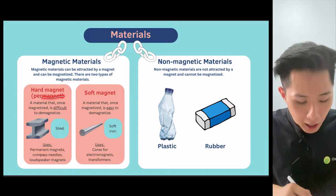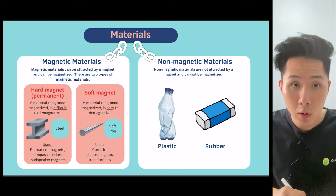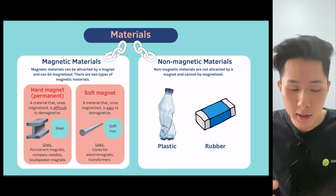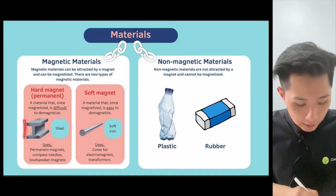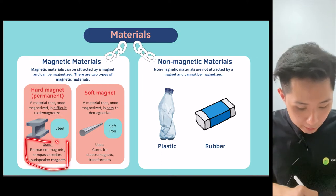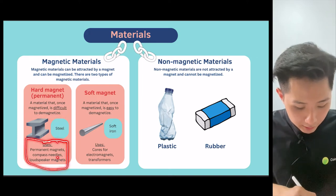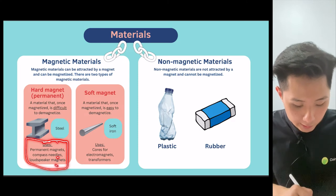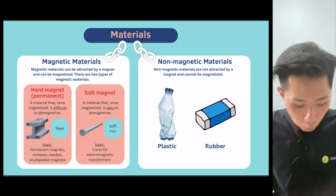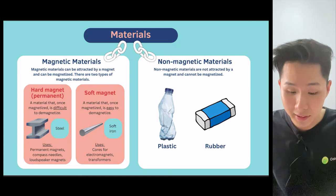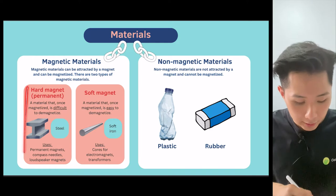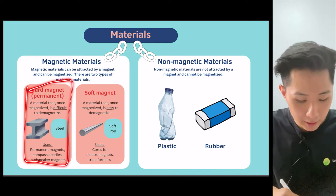Let me explain. A hard magnet is a material which, once it is magnetized, is very difficult to demagnetize. One example is steel. They are used to make permanent magnets, compass needles, and loudspeaker magnets. This makes sense because you don't want your permanent magnet to suddenly lose its ability to attract things, so that's why hard magnets are used.